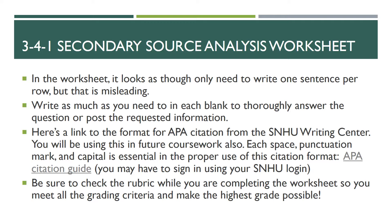The worksheet will ask you to provide an APA citation for the source you're using from the research kit. You can copy and paste that from the research kit, but you also need to use the APA citation guide link provided. You're going to be using that citation format throughout the course. One of the difficulties of publishing for historians is that every publisher requires a specific citation format, and if you have a comma out of place they will reject your manuscript. So citation format is very important to historians, which is why it's emphasized so much in this course.